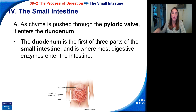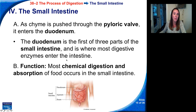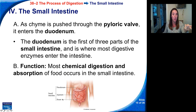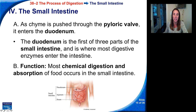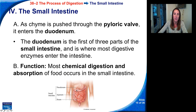The duodenum is the first of the three parts of the small intestine and is where most digestive enzymes enter the intestine. Most chemical digestion and absorption of food occurs in the small intestine — those are its two main functions. The pyloric sphincter leads into the duodenum, and this is where most of the remaining chemical enzymes enter the digestive system.